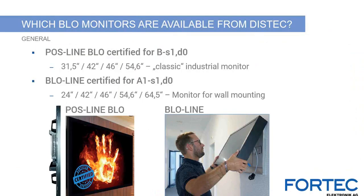Distex offers two versions of fire load optimized monitors. The Postline BLO is certified for fire protection classification B S1 D0, meaning hardly flammable, little or no smoke development, and no burning dripping — with a more classic industrial monitor appearance. The BLO line monitor is certified for the highest classification A1 under DIN EN 13501-1, meaning non-flammable, and is flush to the wall to prevent flames getting behind the monitor. Postline BLO monitors are available from 32 to 55 inches; BLO line monitors from 24 to 65 inches.